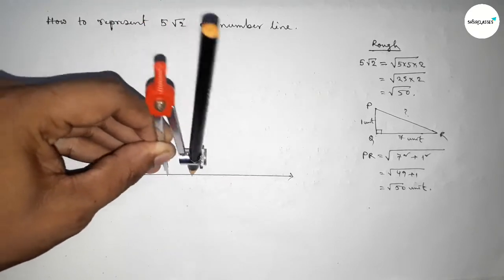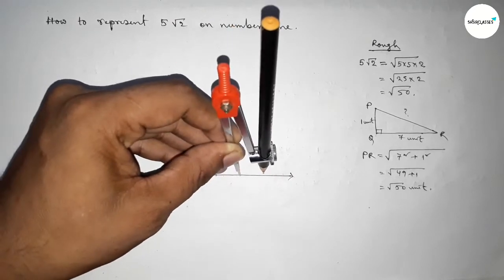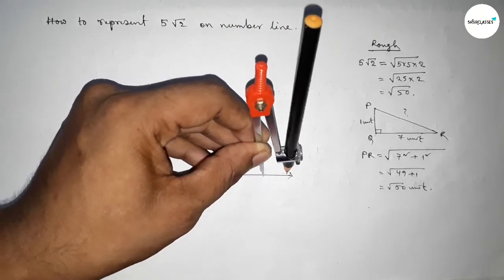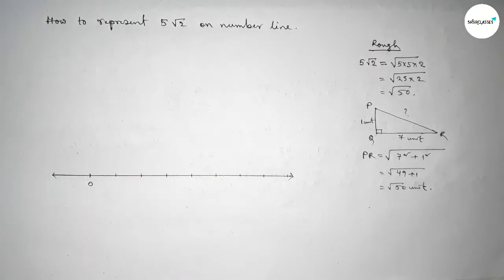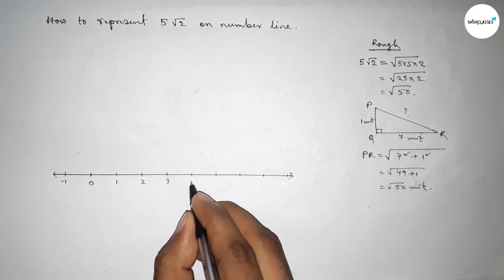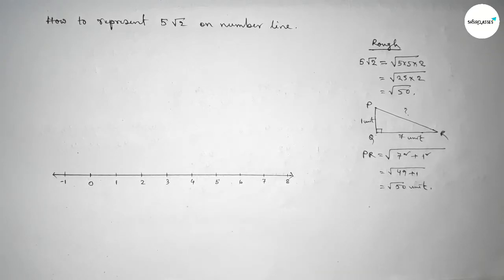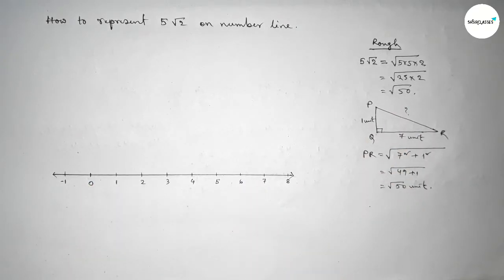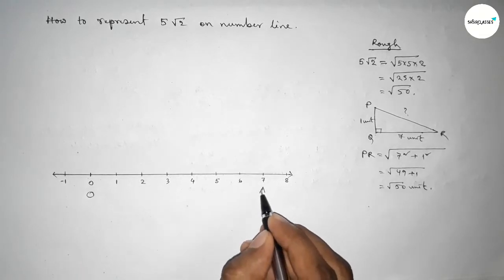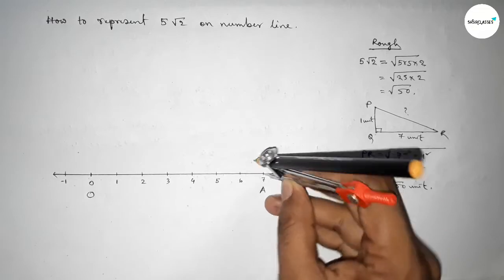By this way and the length we take one unit length, so mark here also. Taking here -1, here 1, 2, 3, 4, 5, 6, 7, 8. Now applying this concept here between 0 to 7, so taking here point O and here A.